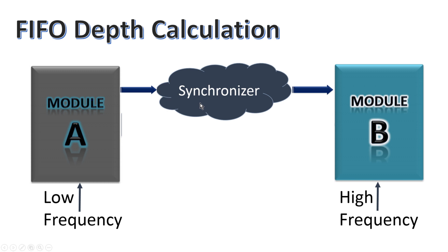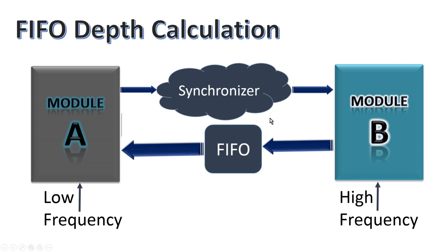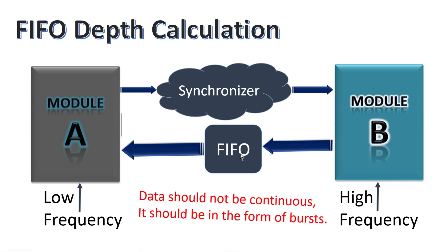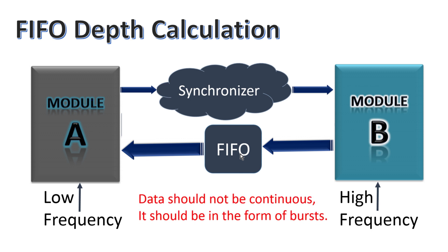However, because both modules are working at different clock frequencies, as per clock domain crossing, we need some sort of clock synchronizer between the two modules. When module B transmits data to module A, our writing speed is very high compared to our reading speed, so we need some sort of memory buffer or asynchronous FIFO in the middle. One important clarification: the data should not be continuous — it should be in the form of bursts, because if data is continuous, the asynchronous FIFO will become full and we will lose all data thereafter.